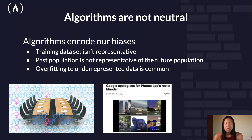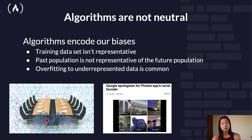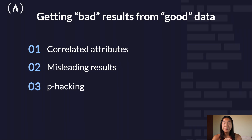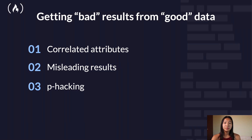Finally, let's move on to the ethics surrounding algorithms. Algorithms are not neutral — algorithms encode our biases. Training data is not usually representative, past population is not representative of the future population, and overfitting to underrepresented data is very common. There are a few different ways that we get bad results from good data: correlated attributes, misleading results, and p-hacking.